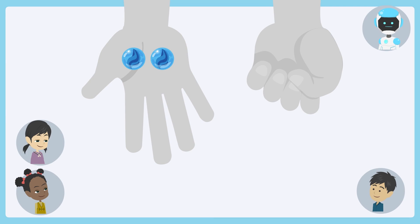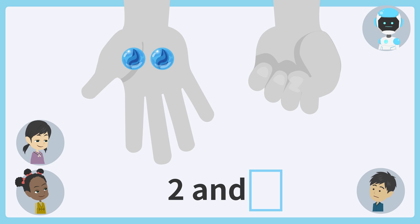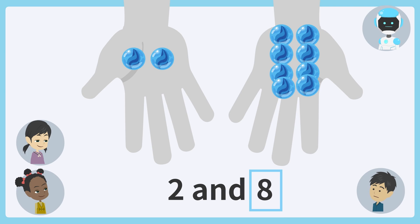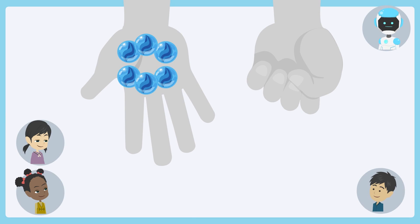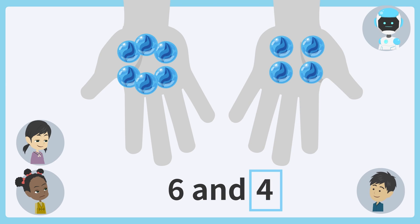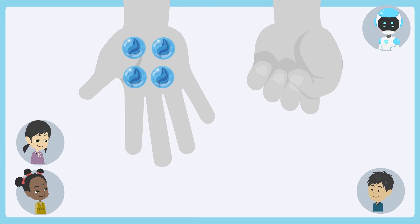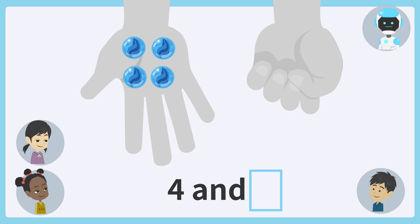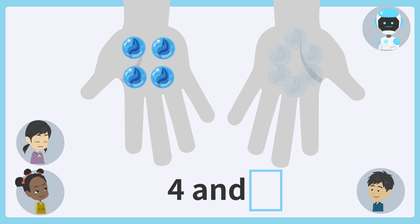How many marbles are hidden? Eight marbles. Good. How many marbles are hidden? Eight marbles. Good. How many marbles are hidden? Six marbles. Good.